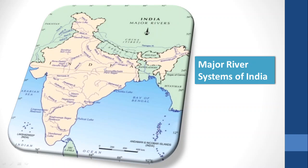The second major Himalayan river is the Ganga. The Ganga originates from the Gangotri Glacier in the north, flows through the northern plains, and then falls into the Bay of Bengal.